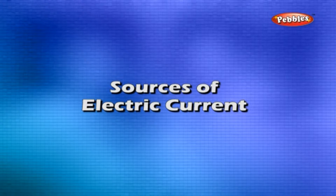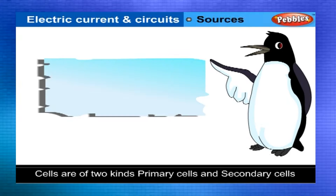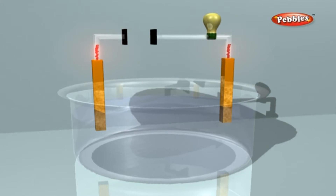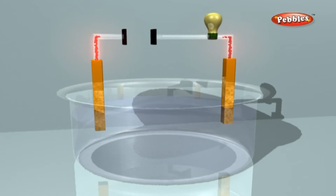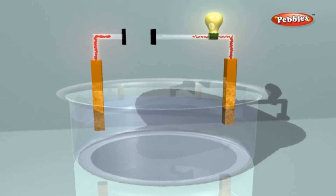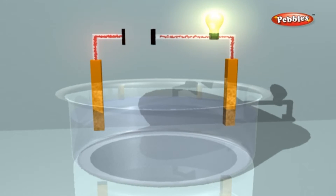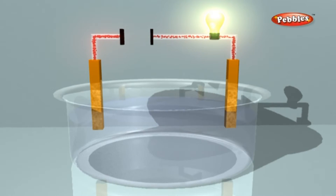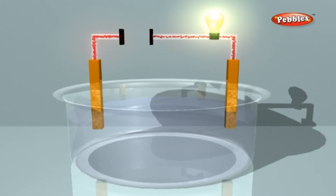Sources of electric current. Cells are of two kinds: primary cells and secondary cells, or accumulators. The primary cells provide current as a result of a chemical reaction. They cannot be recharged, which means the chemical reaction is irreversible.